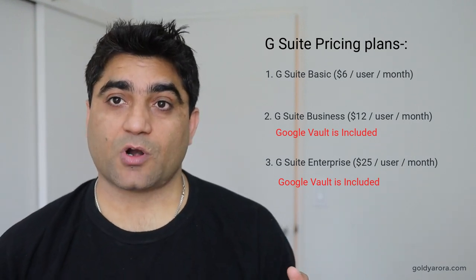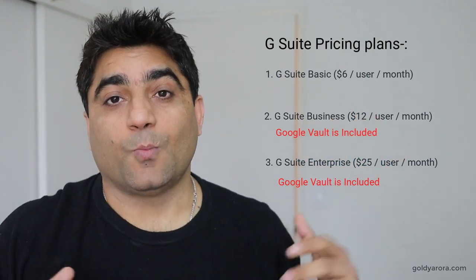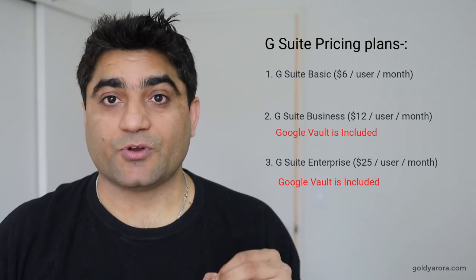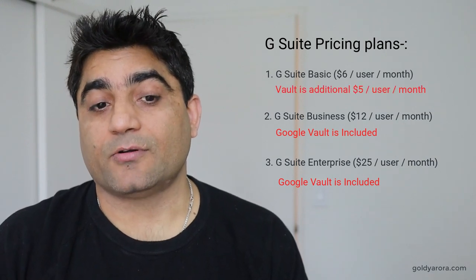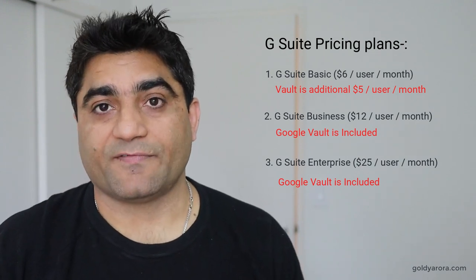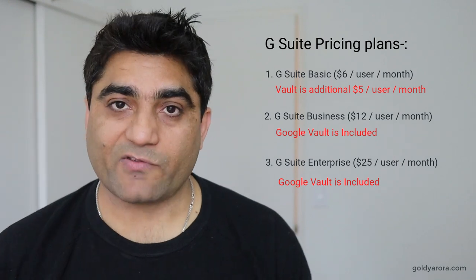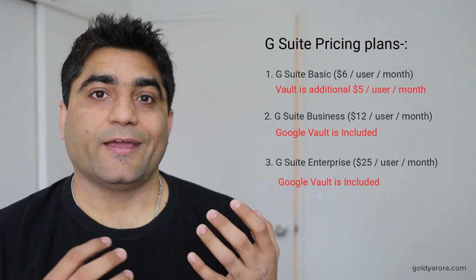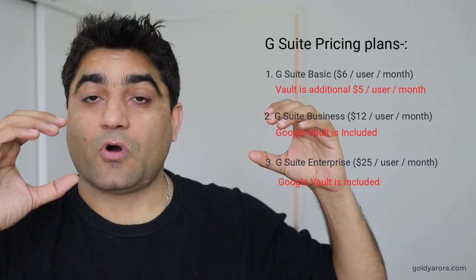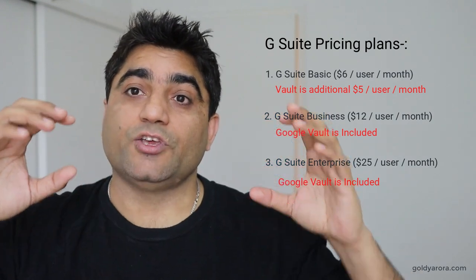So we know that Google Vault comes as part of the subscription for G Suite Business and Enterprise. But what if you are running G Suite Basic? Well, you can still subscribe to Google Vault as a standalone SKU or an add-on. You will need to go to your billing and sign up for that, and the cost of just the Google Vault add-on is $5 per user per month. So at the end of the month you will be paying $6 for G Suite Basic plus $5 for Google Vault — so $11 a month. Whereas if you move to G Suite Business, that will cost you $12 a month — just a $1 difference — but in G Suite Business you get a bunch of other things as well.